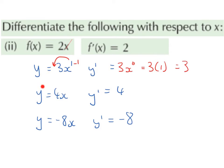So if the function is y equals 4x, then the derivative is just going to be 4. What we did there was we just cancelled out the x. If the function is y equals minus 8x, then the derivative is going to be minus 8. Again, we just cancelled out the x.